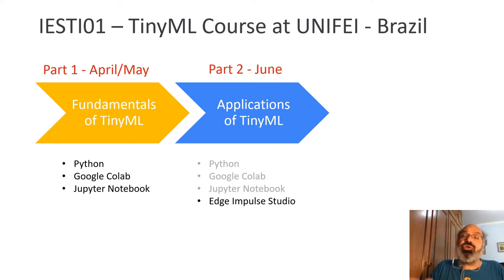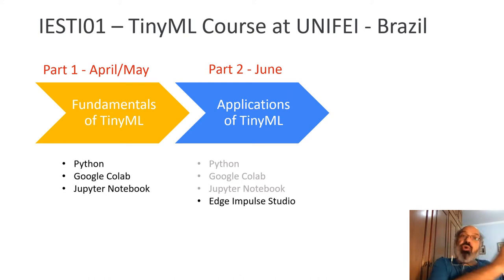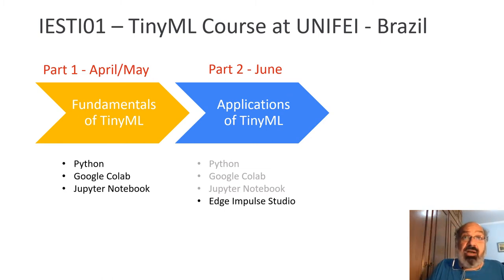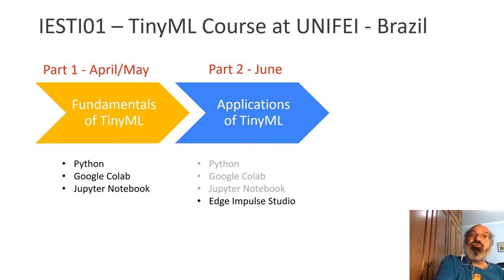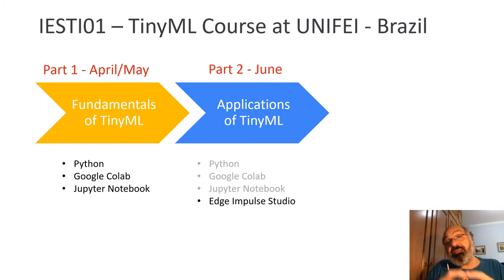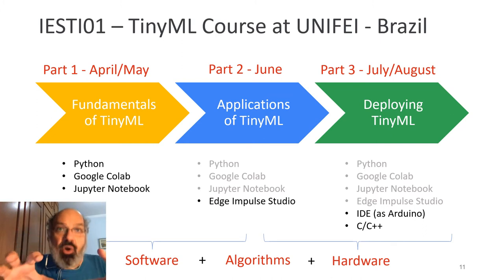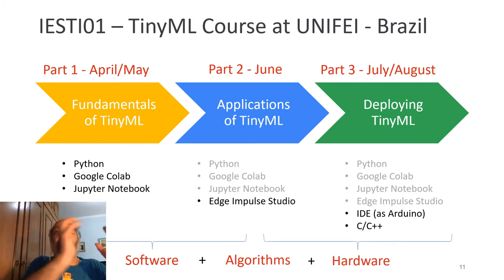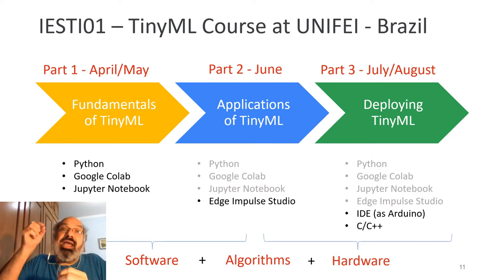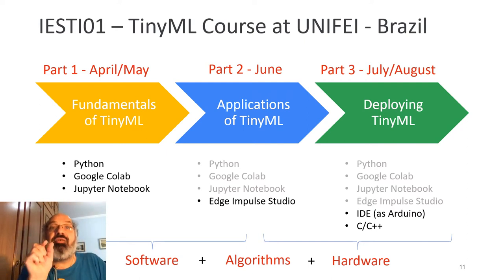Edge Impulse Studio was very important at this stage, because it helped students very quickly understand how to capture real data using their cell phones — using the accelerometer and the microphone inside regular smartphones to capture real data, pre-process the data, generate models as they had learned in the first part of the course, and deploy on the same cell phone. With all that knowledge, we could go into the most important part of the course: taking a model developed on a bigger machine and shrinking the code so it can run inside very small devices.